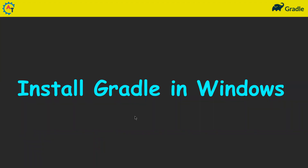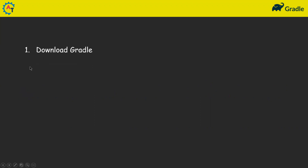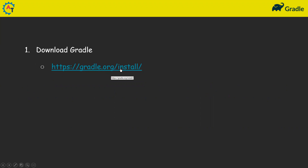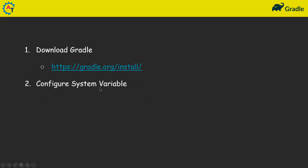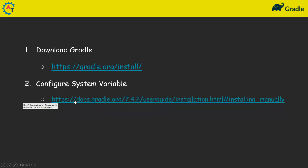In this video we will talk about how to install and configure Gradle in Windows. For that, we need to download Gradle from gradle.org/install and then configure the system variable for Gradle.